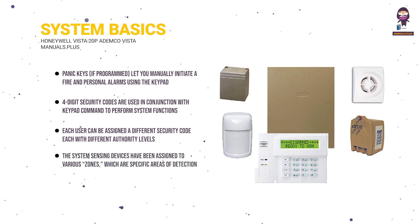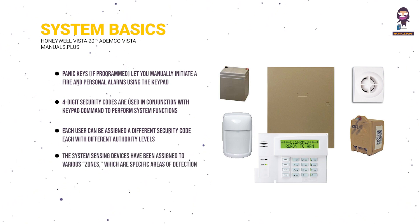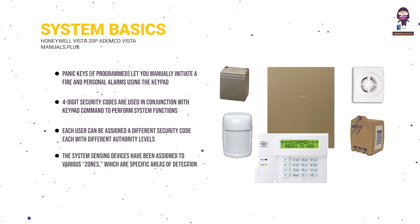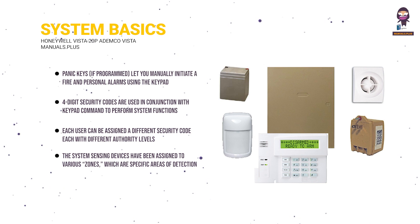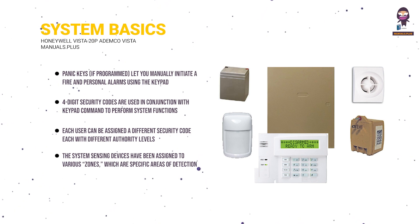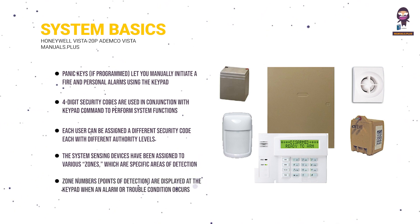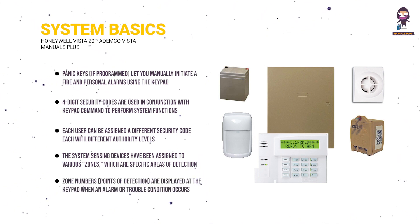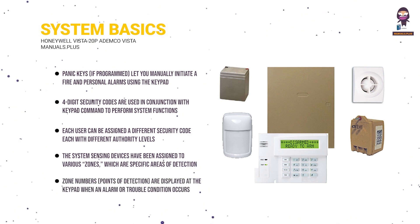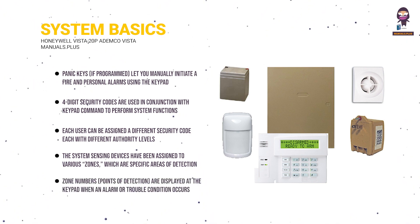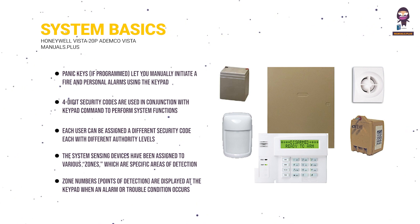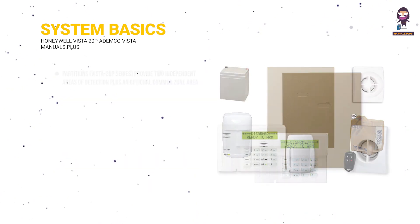The system sensing devices have been assigned to various zones, which are specific areas of detection. Zone numbers, points of detection, are displayed on the keypad when an alarm or trouble condition occurs.